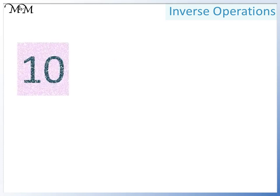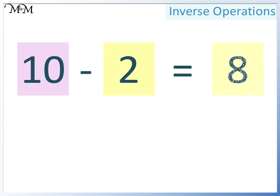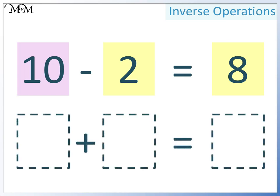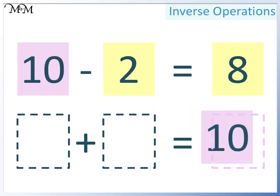Let's start with the subtraction calculation: 10 take away 2 equals 8. A larger number take away a smaller number leaves another smaller number. We want to write this as an addition calculation. In an addition, two smaller numbers add together to make a larger number. Our larger number is 10, so this can go after the equal sign.